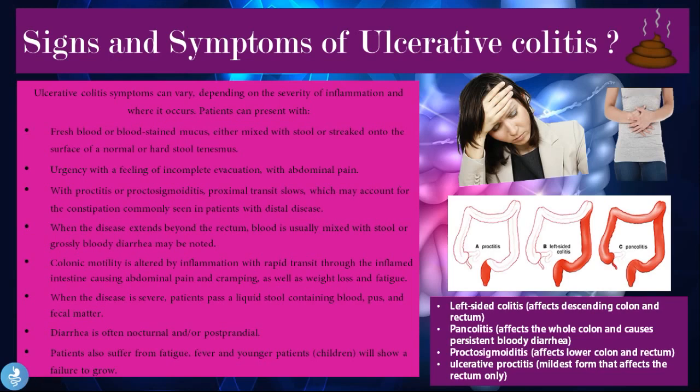When the disease extends beyond the rectum, blood is usually mixed with stool or gross bloody diarrhea may be noted. Colonic motility is altered by inflammation, with rapid transit through the inflamed intestine causing abdominal pain, cramping, weight loss, and fatigue. When the disease is severe, patients pass a liquid stool containing blood, pus, and fecal matter. Diarrhea is often nocturnal and/or postprandial. Patients also suffer from fatigue, fever, and young patients will show a failure to grow.